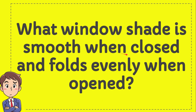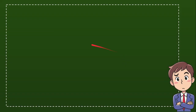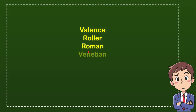What window shade is smooth when closed and folds evenly when open? Now I'll give you four options and you try to guess which one is the correct answer. The first option is valence, the second option is roller, the third option is roman, and the last option is venetian.